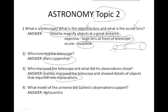And what model of the universe did Galileo's observations support? The telescope and Galileo's observations helped to support the sun, or heliocentric model. The earth goes around the sun.